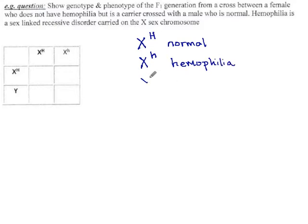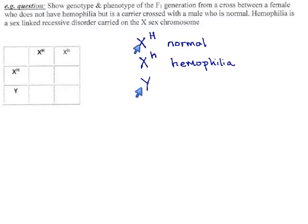The third sex chromosome you could get is a Y chromosome. This one doesn't have the hemophilia gene on it — it has nothing to say about it — so there's no such thing as a big-H or little-h version of this. Only the two X chromosomes have opinions about clotting factors, and the Y has nothing to say.